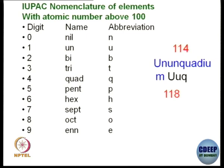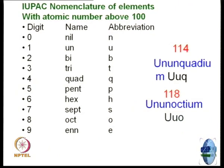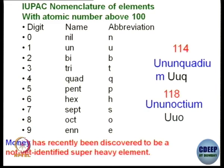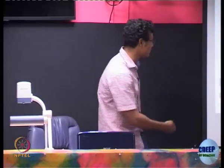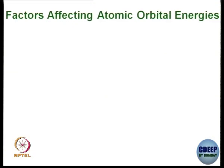If it is 118, you can name it by now: it would be un-un-octium — 1 is un, 1 is un, 8 is oct, giving un-un-octium. As a small homework: money has recently been discovered as a not-yet-identified super heavy element. What should be its IUPAC nomenclature? Simply, the IUPAC name you can say is unobtainium. Let us move on.